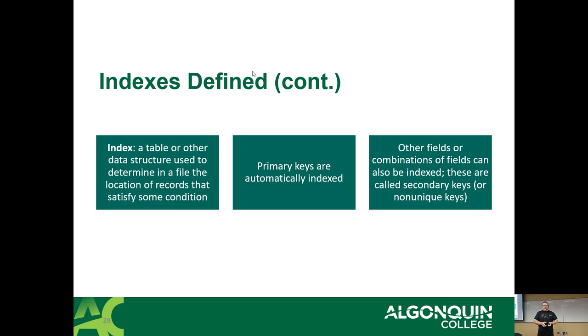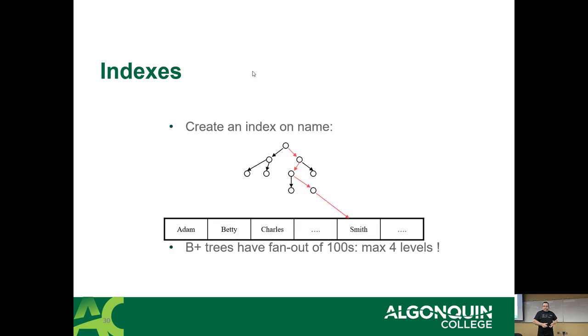Other fields or combinations of fields can be indexed. These are known as secondary indexes, sometimes also known as non-unique indexes. They can be unique, but they're known as secondary indexes. So the most common index method is known as the B plus tree. And for years, until about four years ago, I was operating under the assumption that B plus tree meant binary plus tree. No, it stands for best plus tree. Literally, best tree.